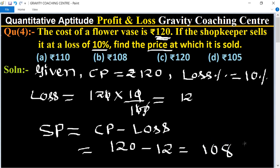This is the selling price of the flower vase, so option P is the correct answer.